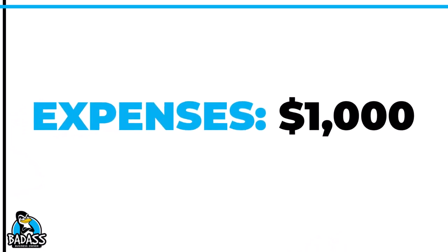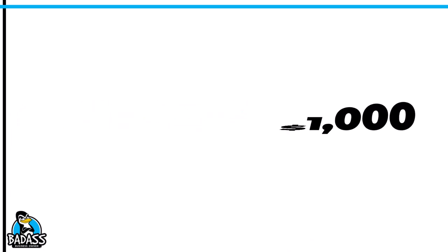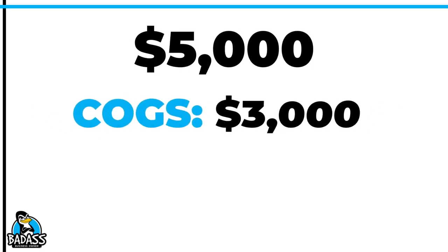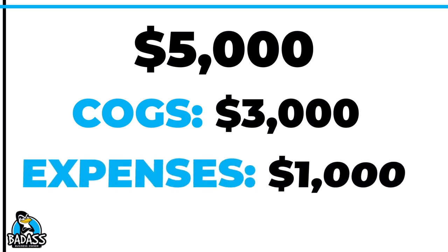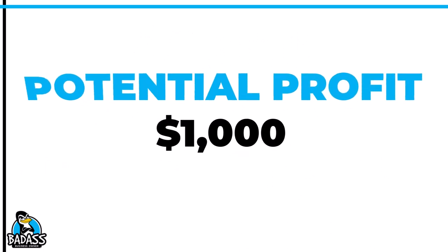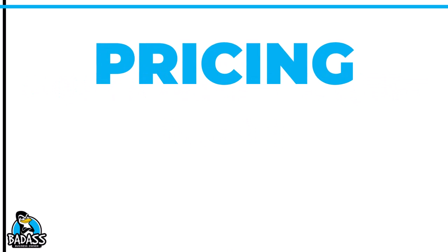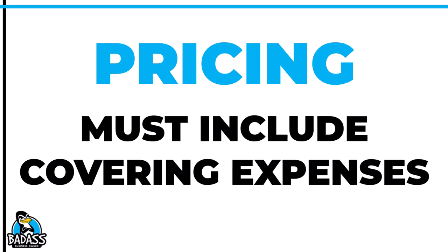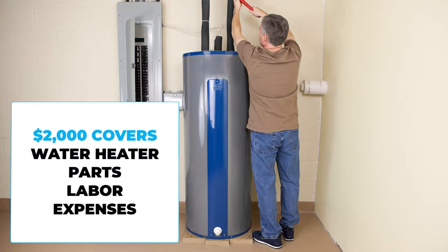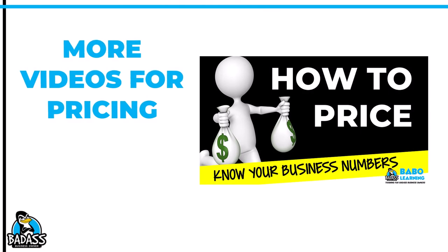Let's say our small business spends about $1,000 a month in expenses on average. Going back to the calculation: this business took in $5,000, spent $3,000 on cost of goods, and now we deduct $1,000 more for expenses — which leaves $1,000 in potential profit. Before moving on to profit, I want to touch on pricing again. Your pricing must include the fact that you have these expenses to pay. When our plumber charges $2,000 for that water heater, they are covering their costs, their labor, and setting aside money to pay the business expenses. I have a link in the show notes on how to price correctly and account for your expenses in your pricing.